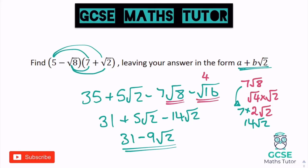Now that looks a little strange because the question asks for the form a + b√2 with a plus. But it just means the value of b is negative 9 — it would be 31 + (−9)√2. We just write it as 31 minus 9 root 2.